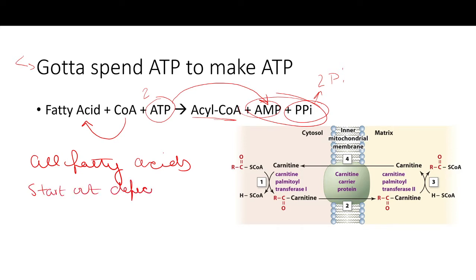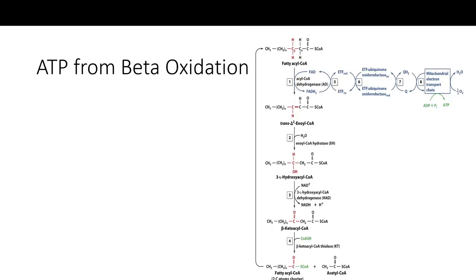All fatty acids — regardless of whether they are odd-chained, even-chained, or desaturated — will start out with a deficit of two ATP. So when we're done calculating, we need to remember to come back and subtract those two ATPs burned to activate the fatty acid. The next step is to calculate how much ATP is derived from beta oxidation of the acyl-CoA.